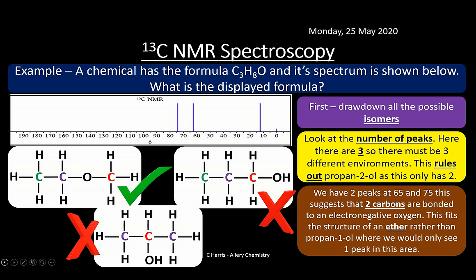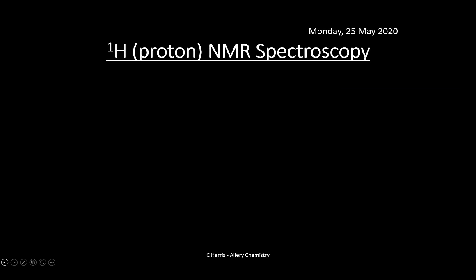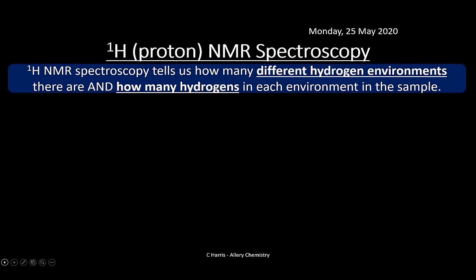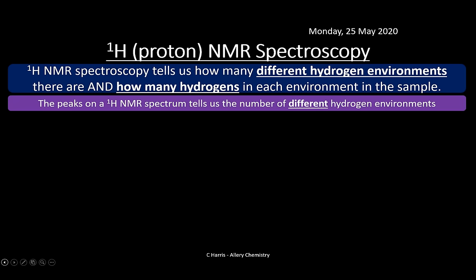The key with NMR is practice — keep looking at lots of spectra. Now let's look at the other type: proton NMR. Proton NMR has more to it — you can look at neighbouring hydrogens and how many there are. Proton NMR tells us how many different hydrogen environments there are and how many hydrogens are in each environment, giving more information than carbon-13 NMR.